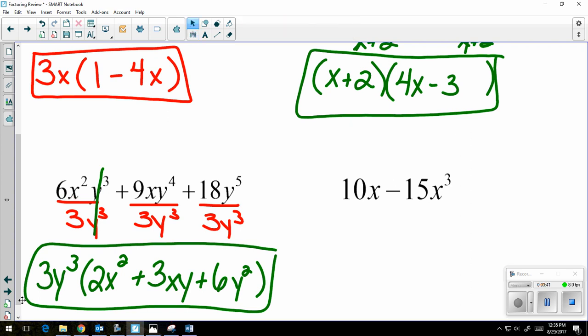And then lastly, 10x minus 15x cubed. My GCF is going to be 5x. When I take that out, I'm going to be left with 2 minus 3x squared.